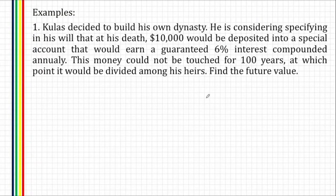He is considering specifying in his will that at his death, $10,000 would be deposited into a special account that would earn a guaranteed 6% interest compounded annually. This money could not be touched for 100 years, at which point it would be divided among his heirs.